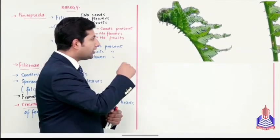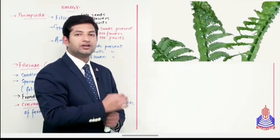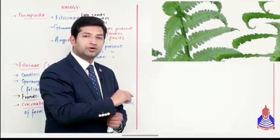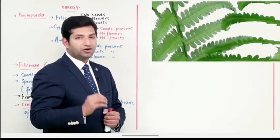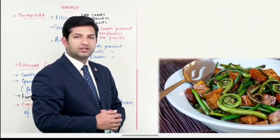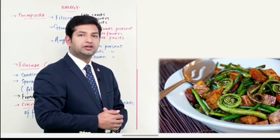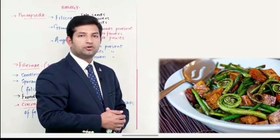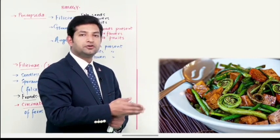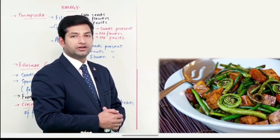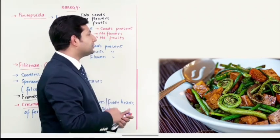तो ये जो coiled feature इनके पास है, और जब ये coiled state में मौजूद हैं, उस वक्त हम इन leaves को कहते हैं fiddleheads. और याद रखिएगा fiddleheads को मुख्तलिफ ममालिक में खुराक के तौर पे भी इस्तमाल किया जाता है - इसको green vegetables के तौर पे मुख्तलिफ किसम की dishes और recipes में add करके food के component के तौर पे इस्तमाल किया जाता है।